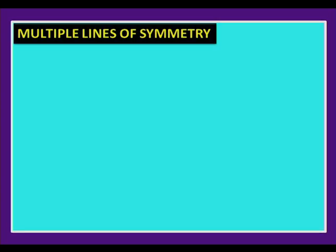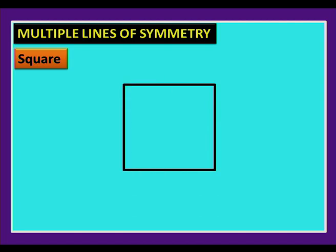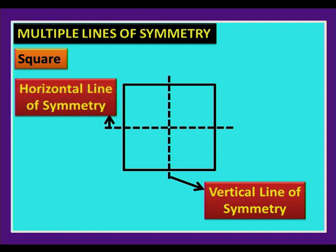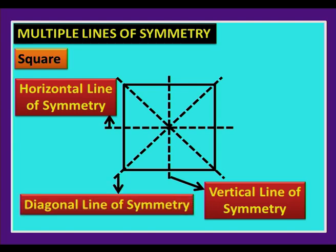Now consider a square — all sides are equal. Drawing horizontal and vertical lines both give symmetry, providing one vertical and one horizontal line of symmetry. Checking diagonal symmetry: drawing one diagonal and folding gives congruent figures, and the other diagonal also works. So altogether, a square has four lines of symmetry — one horizontal, one vertical, and two diagonal.